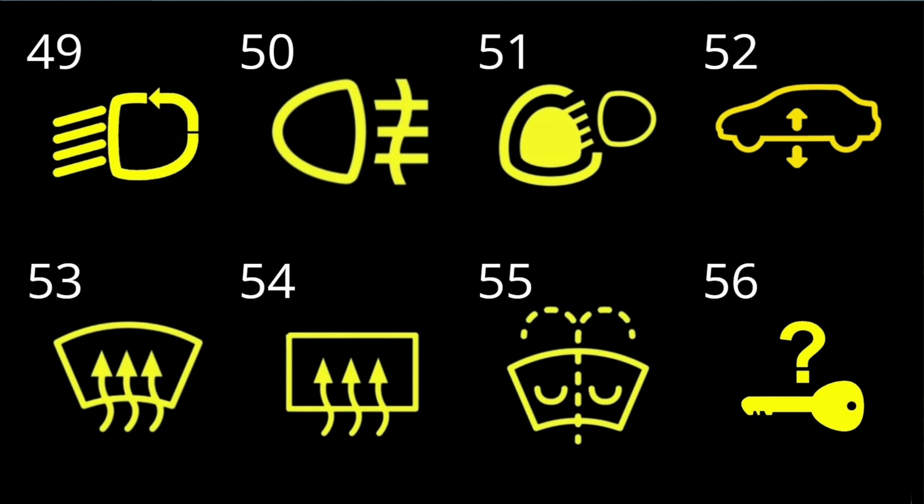50. Rear fog lights. A legal requirement on all vehicles, rear fog lights should be used when visibility is seriously reduced. The rear fog lights make your vehicle more visible to vehicles behind you, thus reducing the risk of a crash.